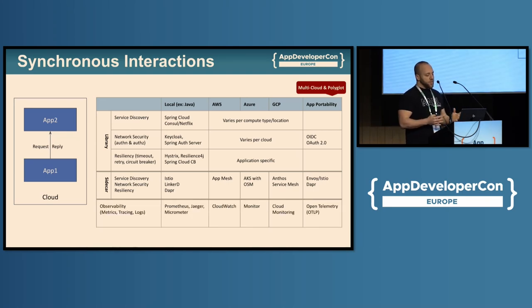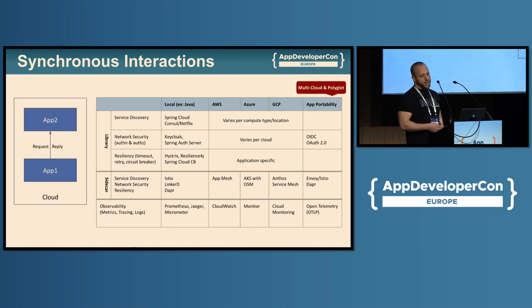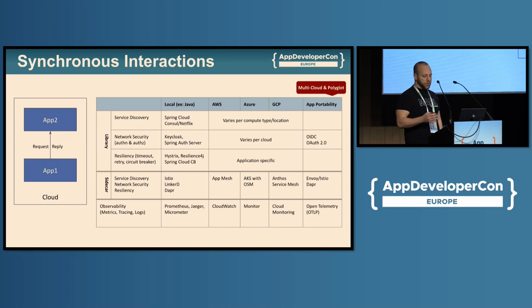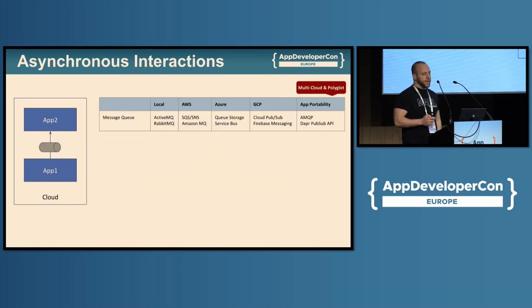In terms of observability, there is a clear winner: OpenTelemetry — the project and the protocol — which gives you the best portability, and most cloud services provide support for it.